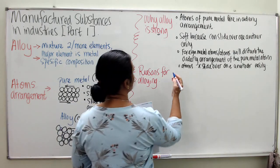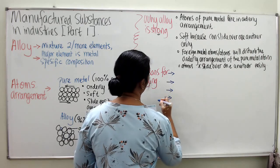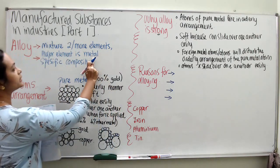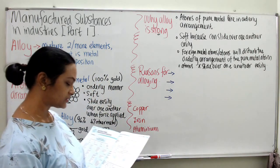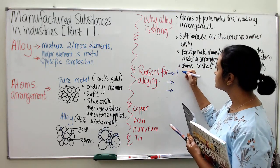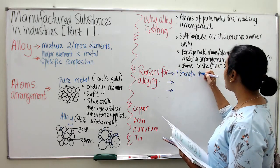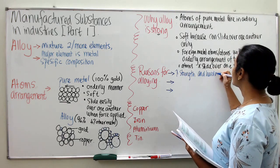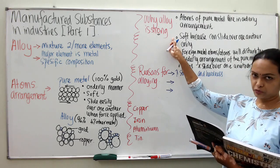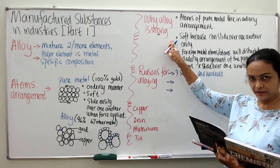There must be some reason why alloying is done. Make sure alloy mainly looks like metal because the major component is metal. We have three reasons why alloying is done. First is to increase strength and hardness, which is explained by the atom arrangement explanation. Second is to increase resistance to corrosion.